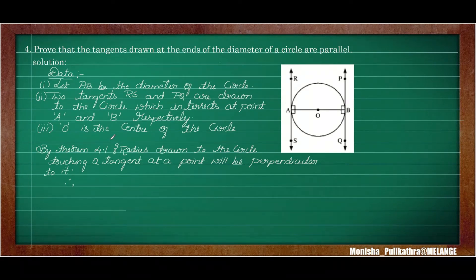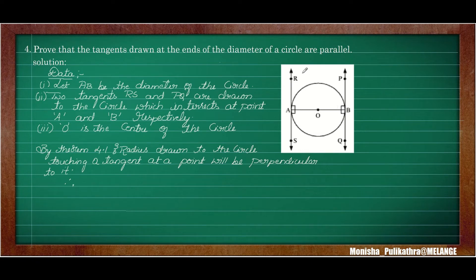Coming to the fourth question: Prove that tangents drawn at the ends of a diameter of a circle are parallel. The tangents are RS and PQ. The data: let AB be the diameter of the circle, O is the center. RS and PQ are the two tangents which intersect the circle at points A and B respectively. By theorem 4.1, if the radius drawn to a circle touches a tangent at a point, the radius will be perpendicular to the tangent.